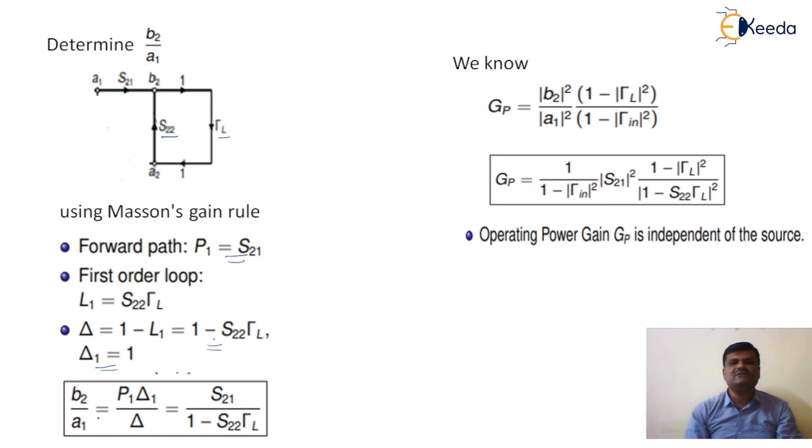Put this value into the equation of power gain. Operating power gain Gp equal to 1 divided by 1 minus gamma in squared, then mod S21 squared, then 1 minus gamma L squared divided by mod 1 minus S22 gamma L squared. So this is the formula of operating power gain of an amplifier.